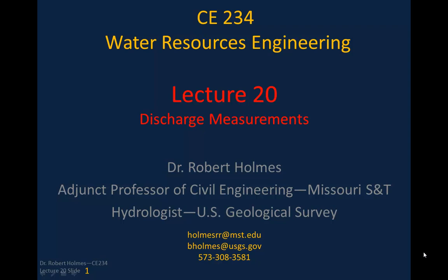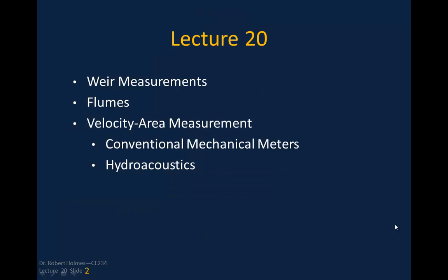This is lecture 20. We're going to speak about discharge measurements. I'm going to cover weir measurements — define what a weir is and talk about the development of equations that predict the flow rate from observations of stage and weir geometry. We'll also talk about flumes and the velocity-area measurement method, which we'll use in the field lab coming up in about a week.